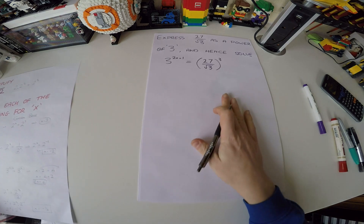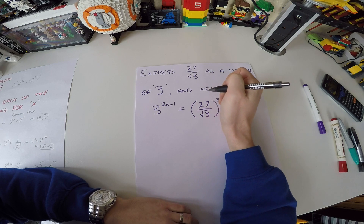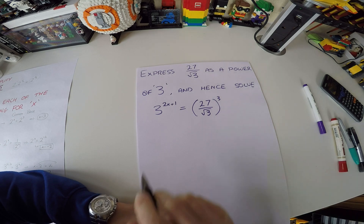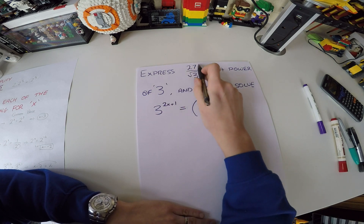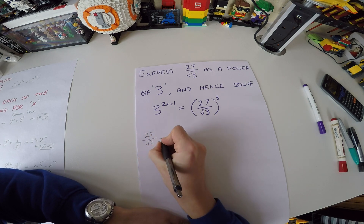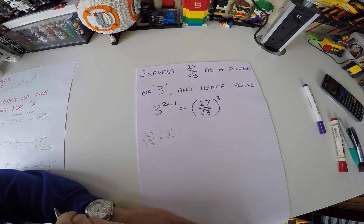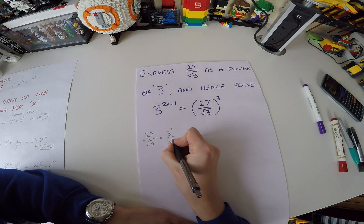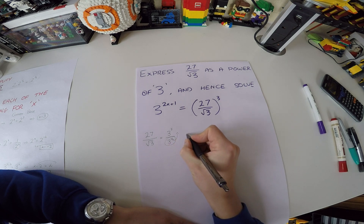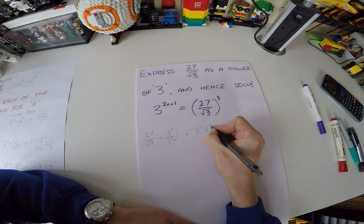I've saved the best one for last. It says: express 27 over root 3 as a power of 3, and hence solve the equation. It looks very difficult but we can take it in steps. We change all terms to powers of 3: 27 is 3 to the power of 3, and root 3 becomes 3 to the power of a half. Then we bring that denominator up, giving 3 to the power of 3 multiplied by 3 to the power of minus a half.